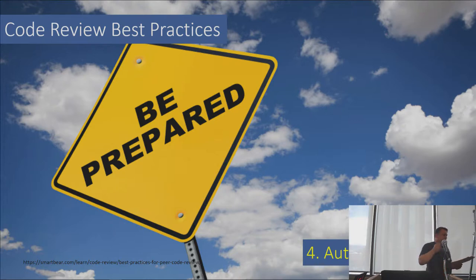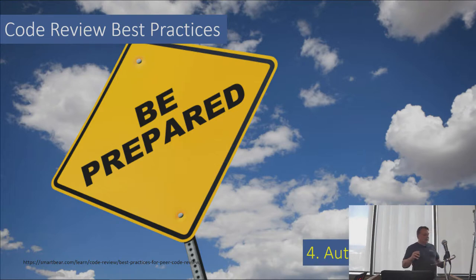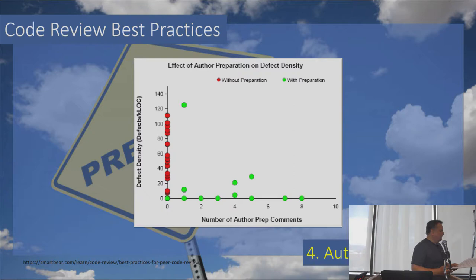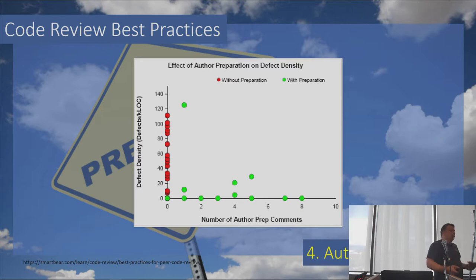One idea tested at Cisco was the notion that author preparation could increase found defects and eliminate them before the review even began. The theory is that when authors go through and annotate their changes in the code review tool — guiding the reviewer through changes in a rational order and reconsidering the rationale behind each modification — not only does it help reviewers understand the review, but it causes the author to rethink and re-examine changes, finding defects themselves during preparation. Well-prepared reviews yielded fewer defects, and the alternative hypothesis that reviewers were just being less thorough was separately examined and eliminated.